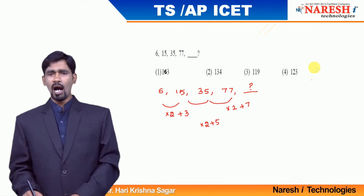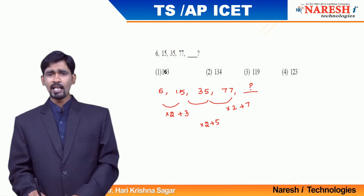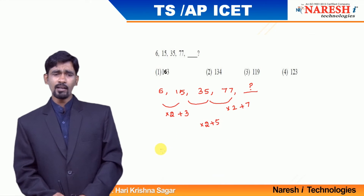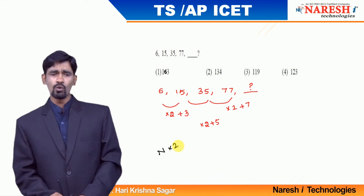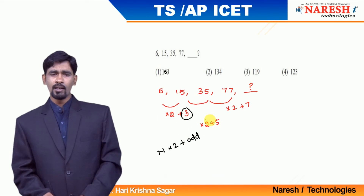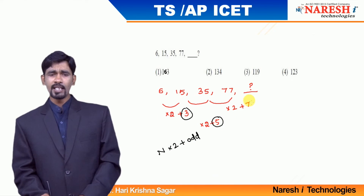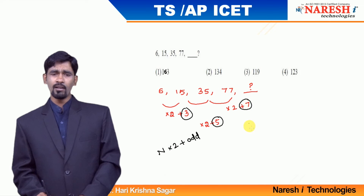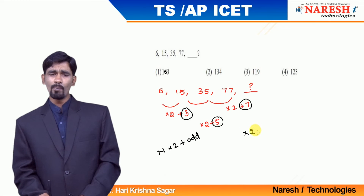Are you able to understand any pattern here? Every number is multiplied by 2 and added with an odd number. Initially ×2 plus 3, next ×2 plus 5, next ×2 plus 7, so the next term should be ×2 plus 9.